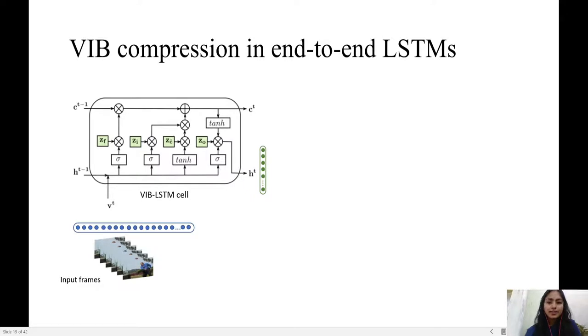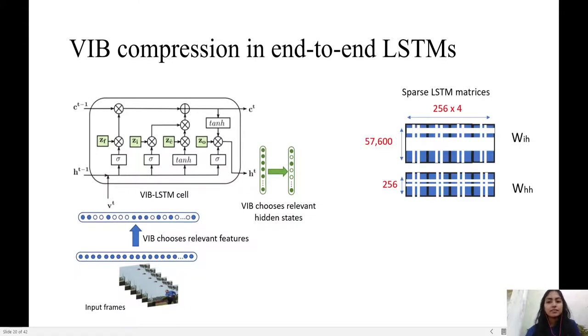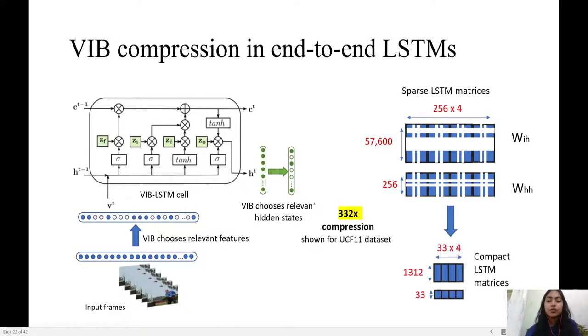In order to compress end-to-end LSTMs, VIB principle is used to get the most prediction-relevant features and the hidden states. The weights corresponding to the irrelevant features and hidden states are zeroed out, shown by white stripes in the LSTM matrices, which leads to sparse LSTM matrices. These can be compacted to form smaller models.